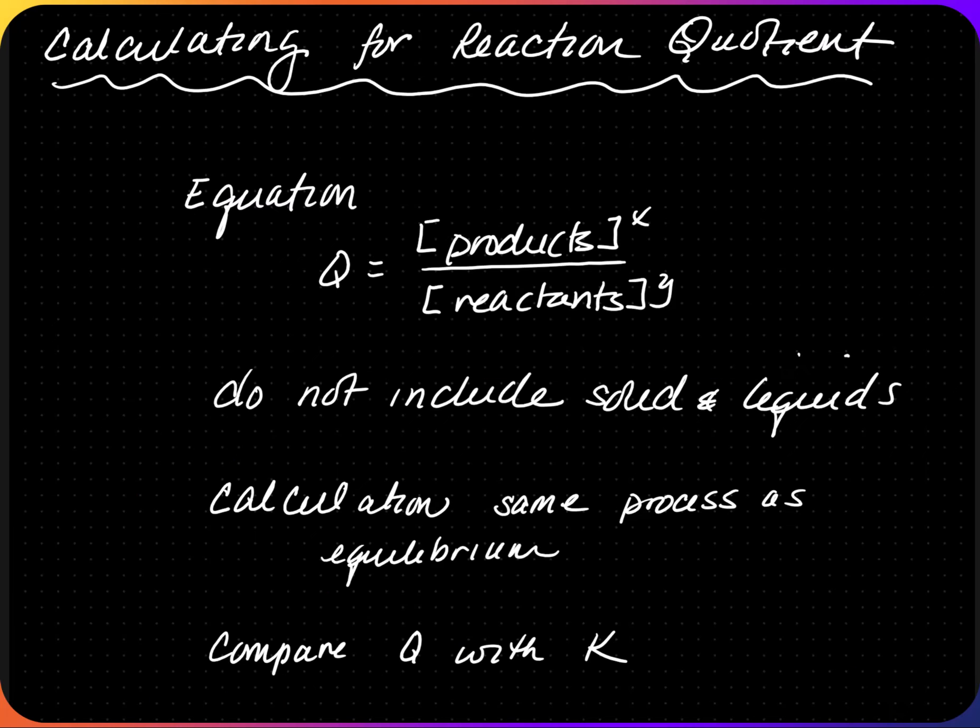When calculating the reaction quotient, the expression is written the same way as Kc — products in brackets to some power (the coefficient of the balanced equation) divided by reactants in brackets to some power. We still do not include solids and liquids because their concentration does not change. There will be no ICE table, and all concentrations for both products and reactants will be provided.